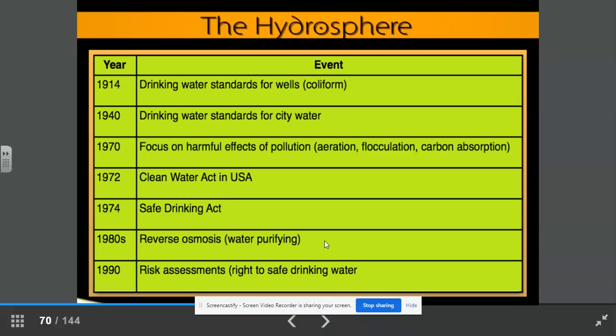Let's look at some important events in the hydrosphere unit that we discussed. In 1914, drinking water standards for wells to test for coliform, a deadly bacteria, became more and more present in our nation. In 1940, drinking water standards for city water became implemented. In 1970, the focus on harmful effects of pollution, including aeration, flocculation, and carbon absorption were studied. In 1972, we had the Clean Water Act became law in the United States. In 1974, the Safe Drinking Water Act became law.